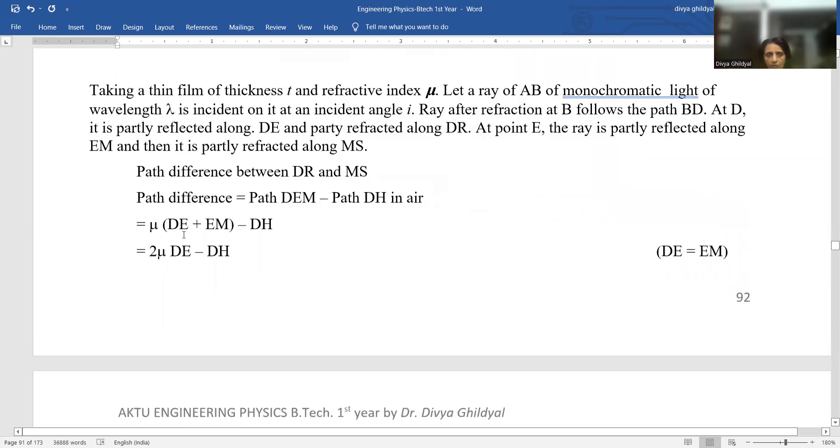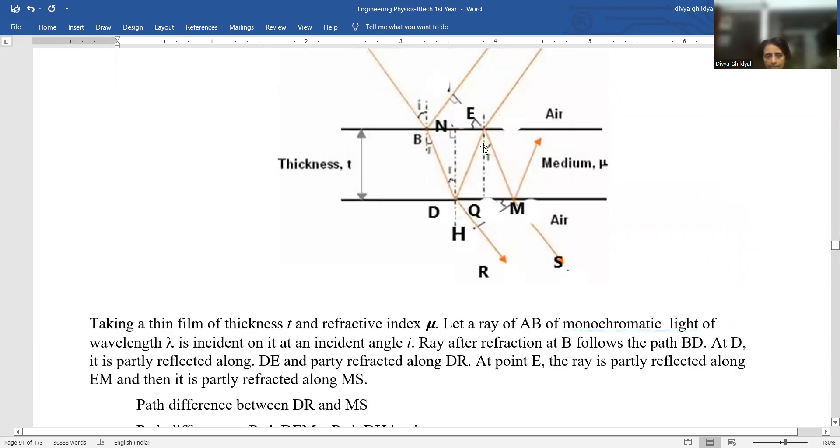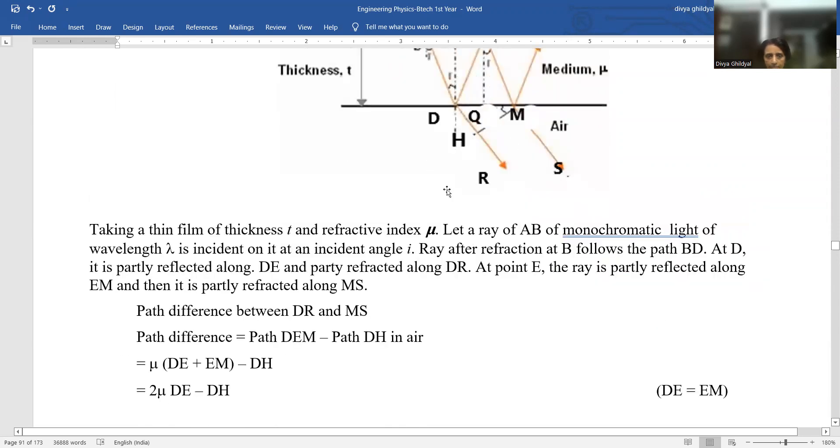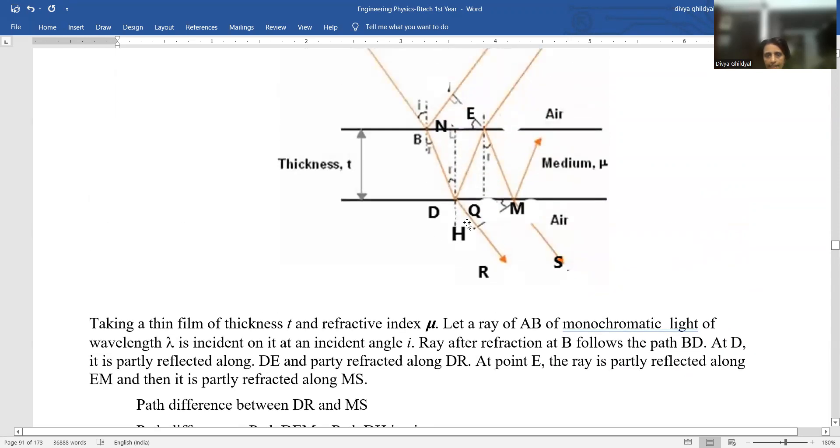What do we get? Mu into DE plus EM minus DH, the perpendicular that has been dropped.